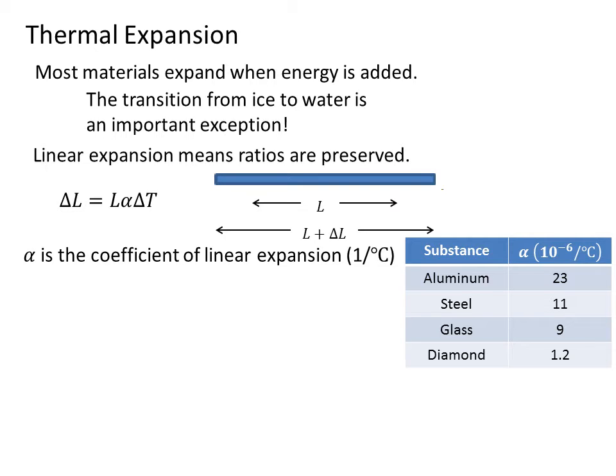Here we have a table of a few common substances: aluminum, steel, and glass. We see that aluminum expands more easily than steel or glass, or particularly than diamond. The coefficient of change is 10 to the minus 6 per degrees C.